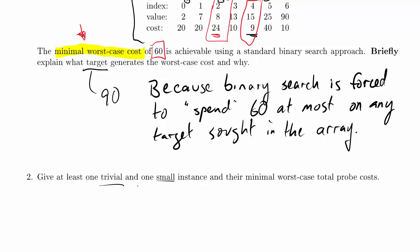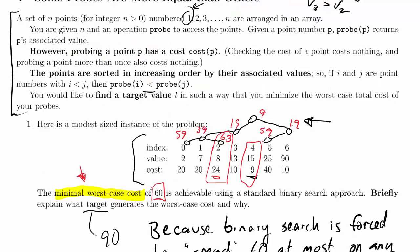So what's a trivial instance here? It's tempting to say an instance with zero points, and honestly I don't think it would be that big a deal to talk about an instance with zero points. But if I scroll back up, it says for a set of n points for n greater than zero, so technically an instance with zero points isn't allowable for this problem. So I think the smallest instance that we can have actually has one point.